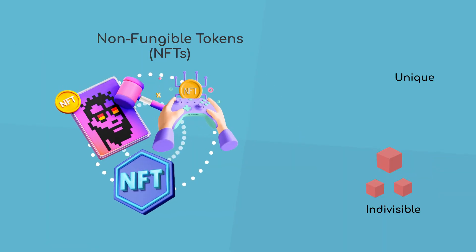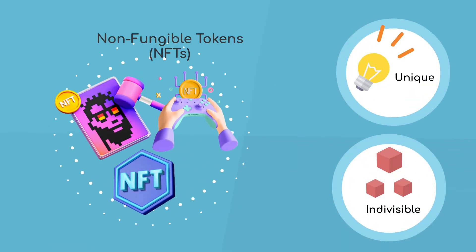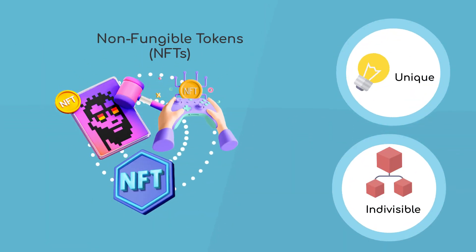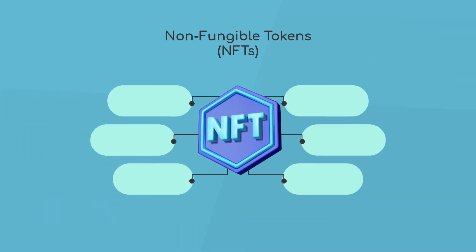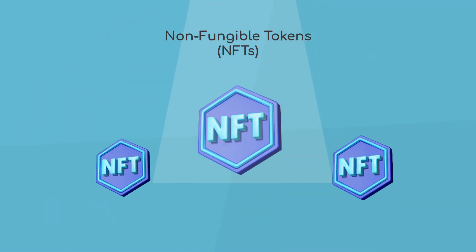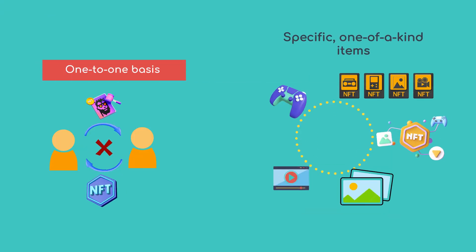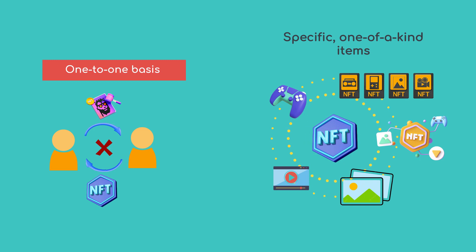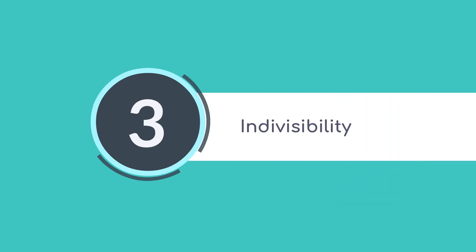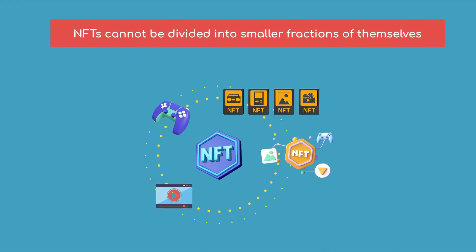Non-fungible tokens (NFTs) — uniqueness: NFTs represent something unique and indivisible. Each NFT has distinct properties and characteristics that differentiate it from all other tokens. NFTs are not interchangeable on a one-to-one basis because they represent specific, one-of-a-kind items.